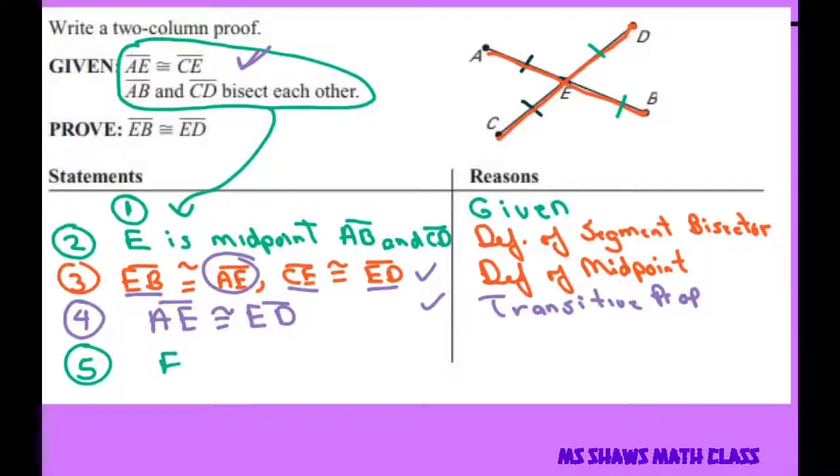And then finally five, we're doing the same thing: EB is congruent to ED, and that's also by the transitive property.